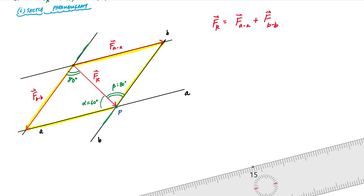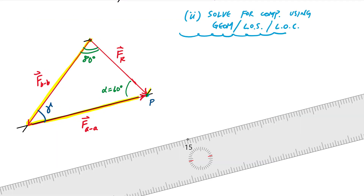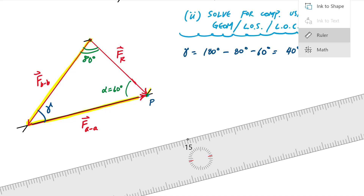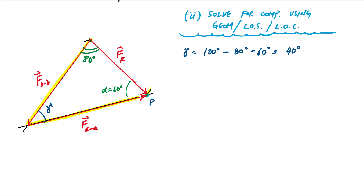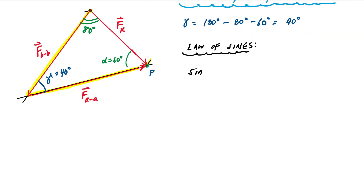Now it's just a matter of using geometry to solve for the lengths of sides BB and AA in this triangle. I'll use the law of sines. Gamma is 180 minus 80 minus 60, which gives gamma equals 40 degrees.